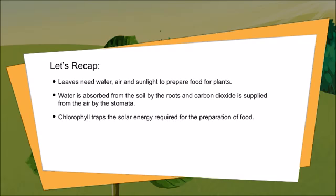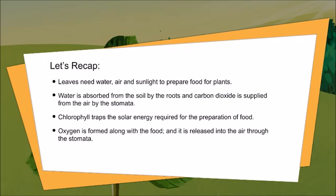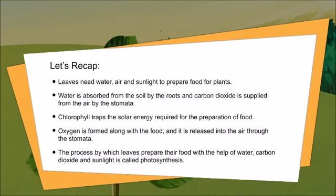Chlorophyll traps the solar energy required for the preparation of food. Oxygen is formed along with the food and it is released into the air through the stomata. The process by which leaves prepare their food with the help of water, carbon dioxide, and sunlight is called photosynthesis.